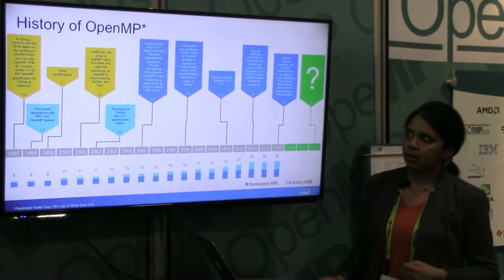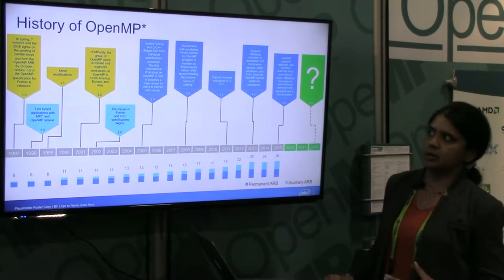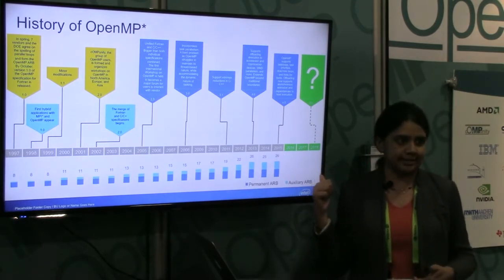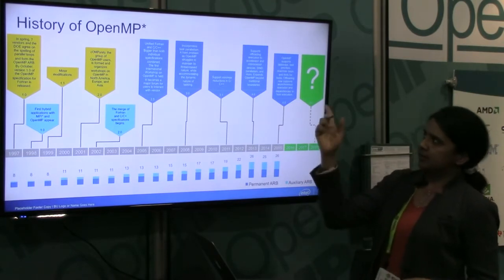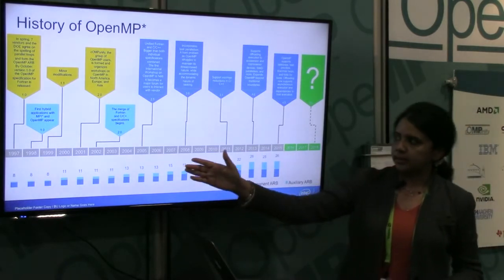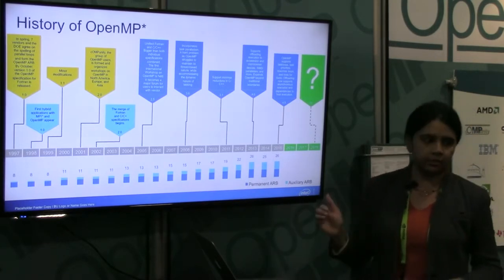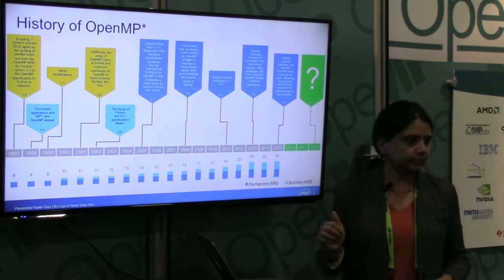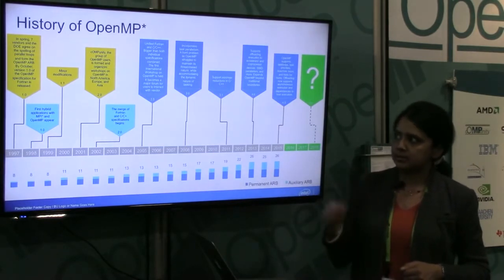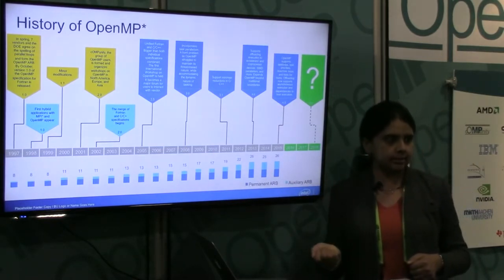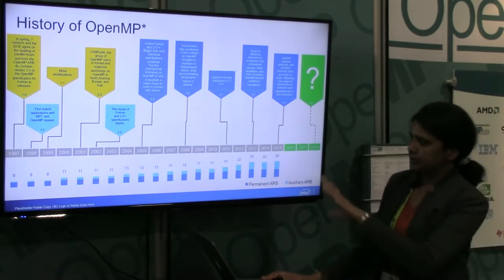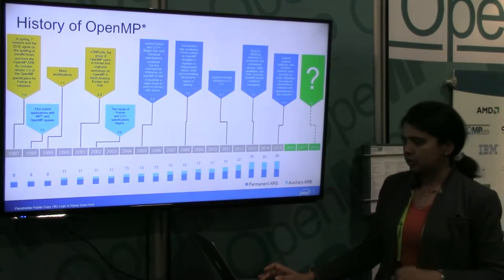This slide borrowed from the OpenMP ARB shows the history of OpenMP. It started in 1997 and we are in 2016, with the question mark here being version 5.0, which was mentioned at the OpenMP session above, released in 2018. It started as a small group and expanded to around 29-30 members with different vendors and universities. The amount of features added to the standard continuously improves depending on application needs, user needs, and implementation details.